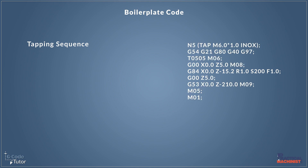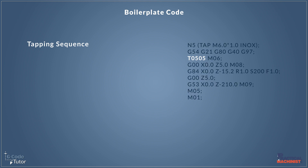Everything else in a tapping sequence remains the same. We have our safe rapid distance to the beginning of the job, turning the coolant on and off, the rapid distance once we've finished tapping our part, and then the sequence where we go back home to the tool change position, stop the spindle, and maybe an optional stop. So everything else in this sequence remains the same for all parts apart from our tool position in the turret and the actual G84 tapping sequence line.